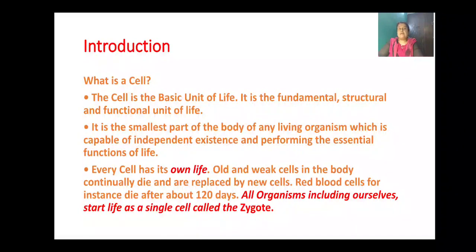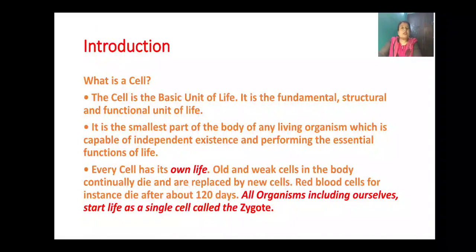All organisms, including ourselves, start life as a single cell which is called the zygote. What is a zygote? Fertilization is the process in which the male gamete fuses with the female gamete. The fused product of these two gametes gives rise to the zygote. This zygote is considered a single cell and life begins. Then the zygote continuously divides mitotically and a full-grown organism is formed.